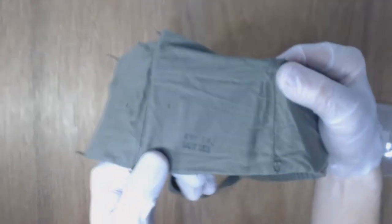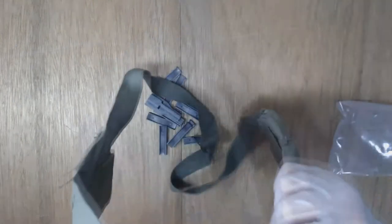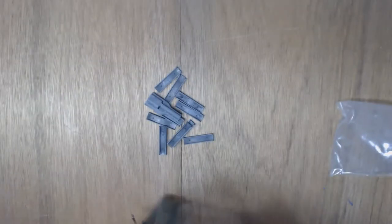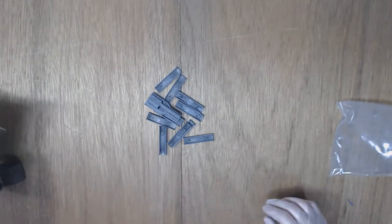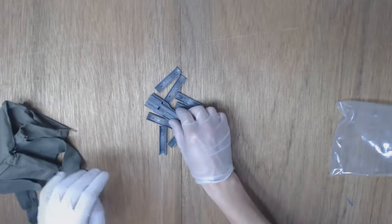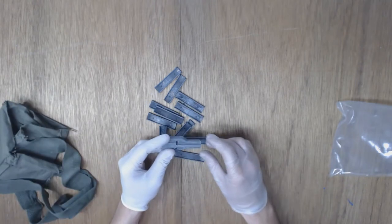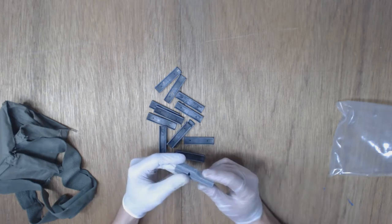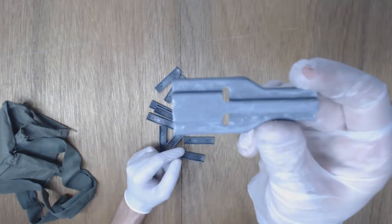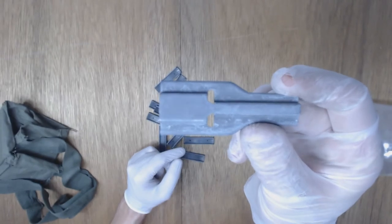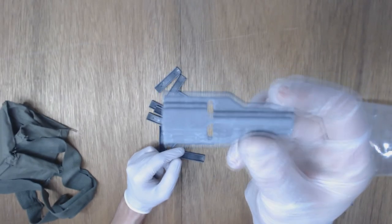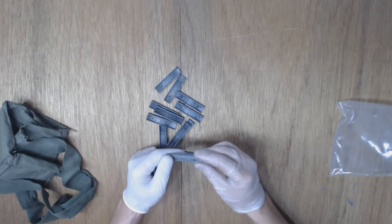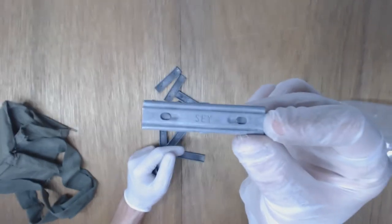Most of them will have a date stamp on the back. This one's 1963. The loaders will usually be stamped SEY. Same with the stripper clips.